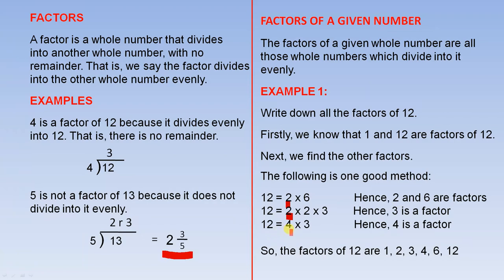12 can also be written as 4 times 3. Those two 2s multiply to give 4, and with the 3, so 4 times 3 is also 12. That gives us 4 as a factor. So using all these calculations, we've come up with 6 factors — those are all the factors of 12.